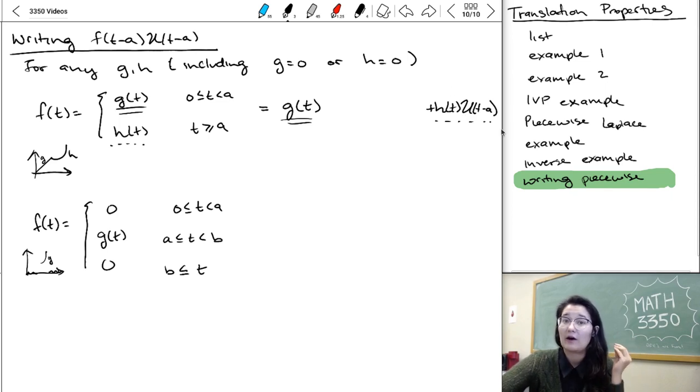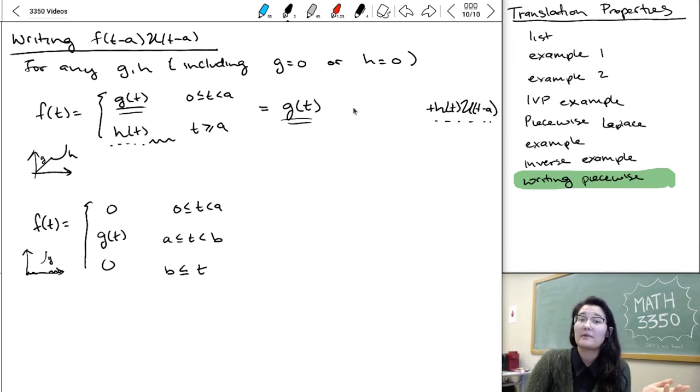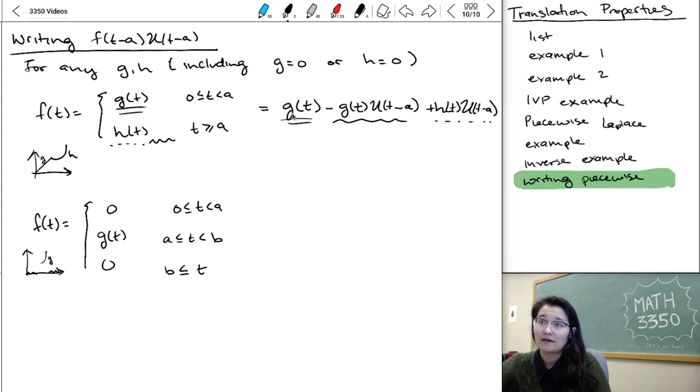For this idea that after A, the function becomes H. So U of T minus A will turn on after A and it's gonna start adding H to your function. It's gonna say, I need to count H. In the middle here, we need sort of an adjustment. We have to say, okay, I also stop being G. It's only H after that point. So I need to take away G whenever I hit that change at A. So now this function, U of T minus A, starts at A and it says, subtract G. So after we pass A, it's gonna be G of T minus G of T, cancel out the G's, and leave behind H.